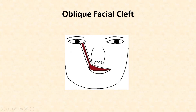Next is the oblique facial cleft. Here, there is non-fusion of the maxillary process with the lateral nasal process, leading to a cleft that extends from the mouth to the medial angle of the eye. This is due to a defect in development of the nasolacrimal duct. Normally, a line of fusion extends from the stomatodeum to the medial angle of the eye, marked by a groove called the nasolacrimal sulcus. A strip of ectoderm gets buried along this groove and gives rise to the nasolacrimal duct.